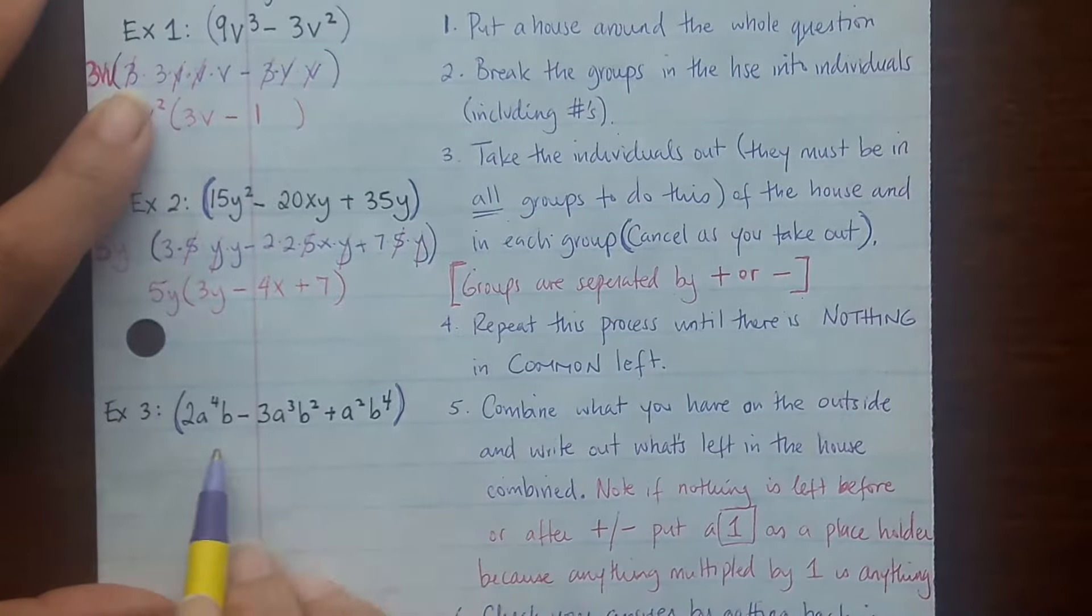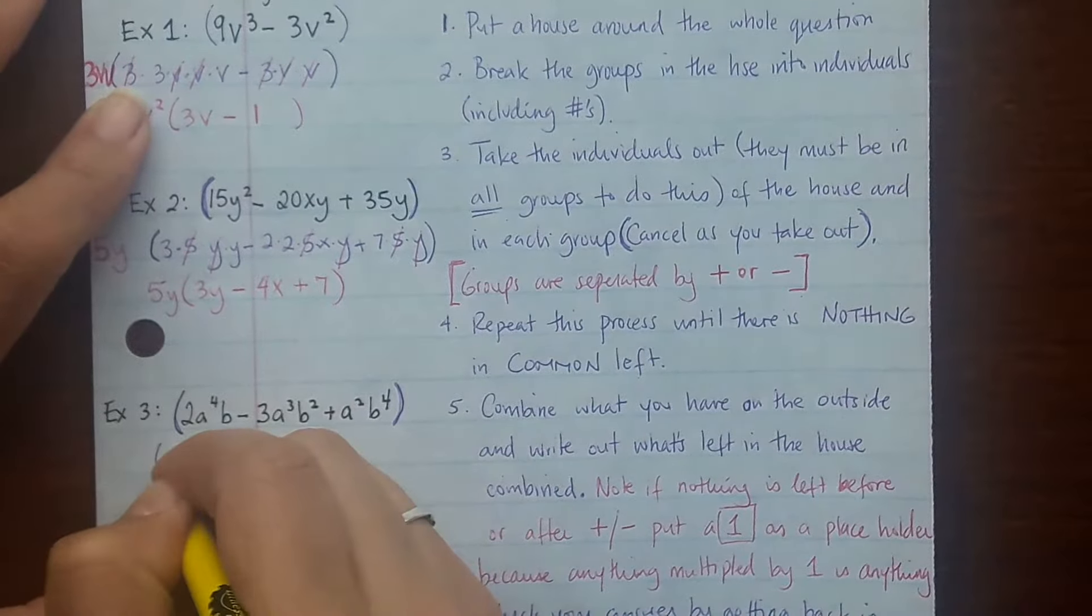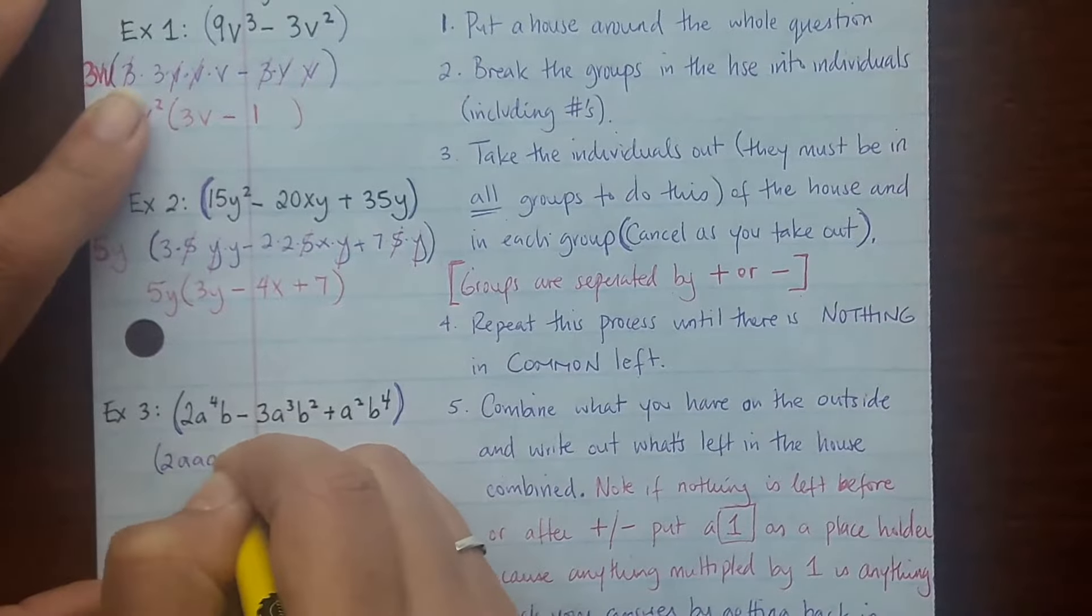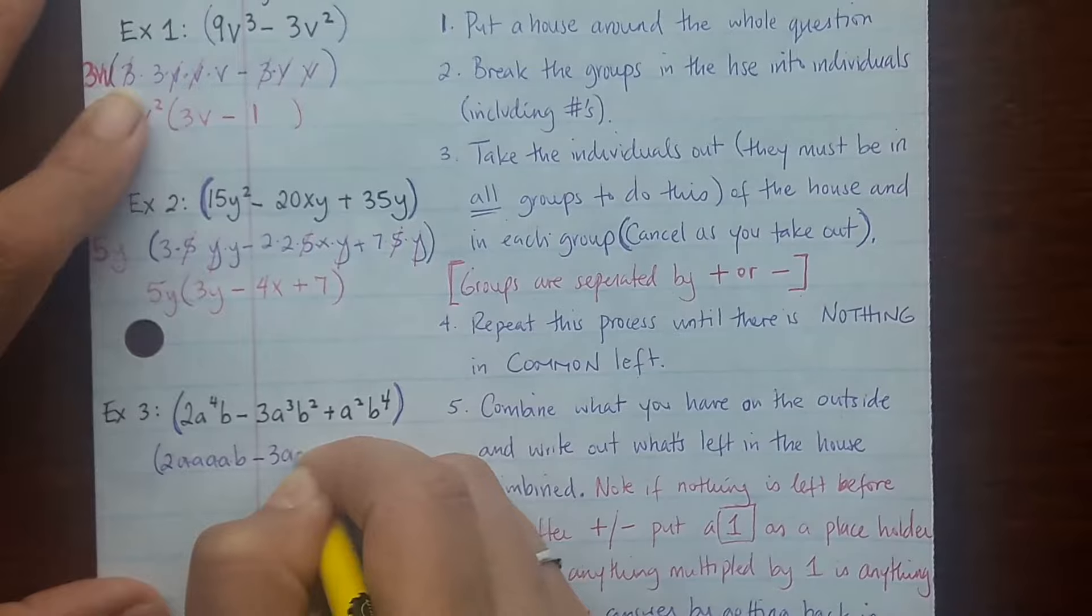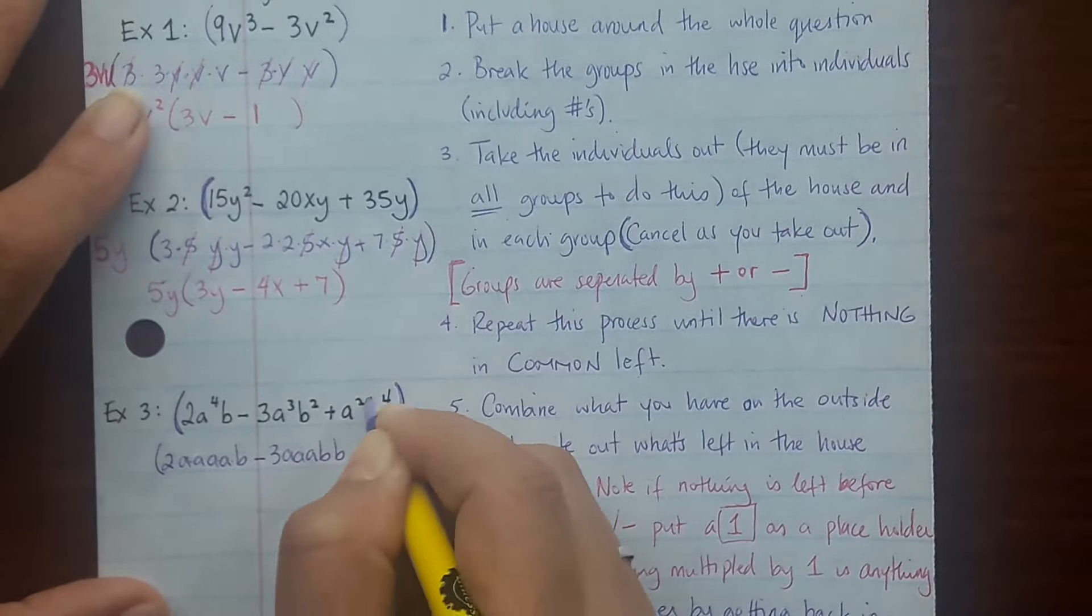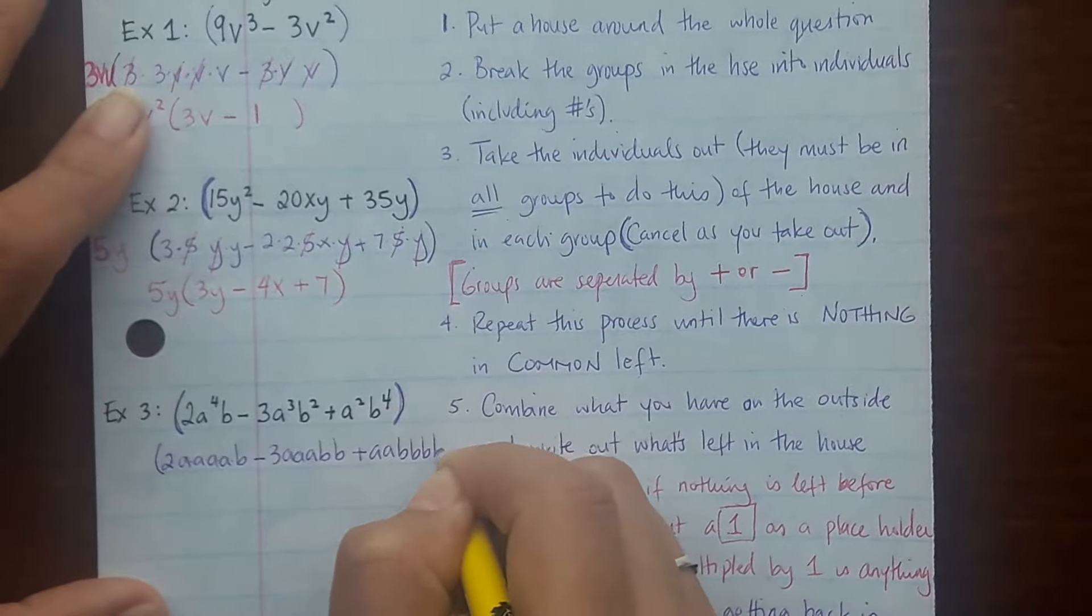Alright, break the groups in the house into individuals. So we have 3 groups here. 2 can be broken down, then we have 4 a's and 1 b. 3 can be broken down, and then we have 3 a's and 2 b's. And then we have 2 a's and 4 b's.